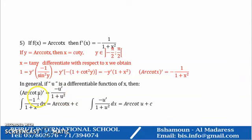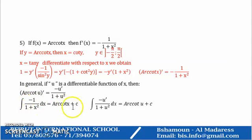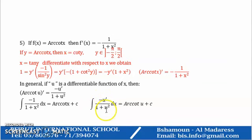More generally, (arc cotangent of u)′ equals minus u′ over (1 + u²). The integral of minus 1/(1 + x²) dx equals arc cotangent of x + C, and the integral of minus u′/(1 + u²) dx equals arc cotangent of u + C.